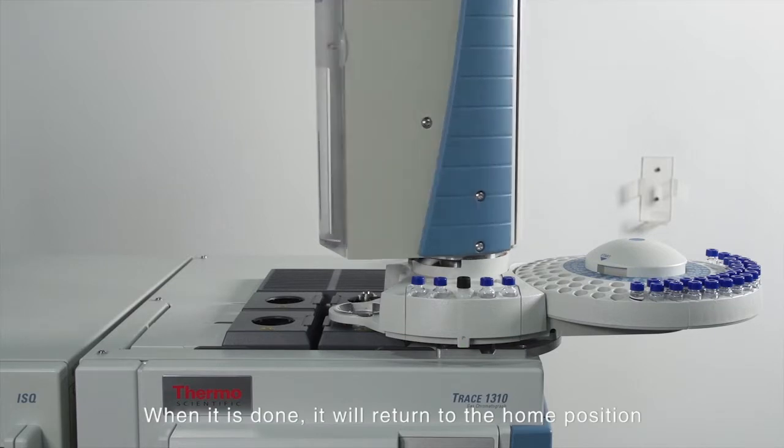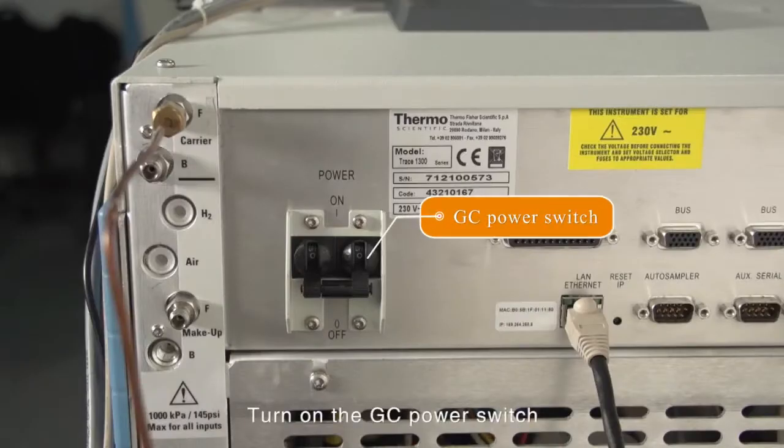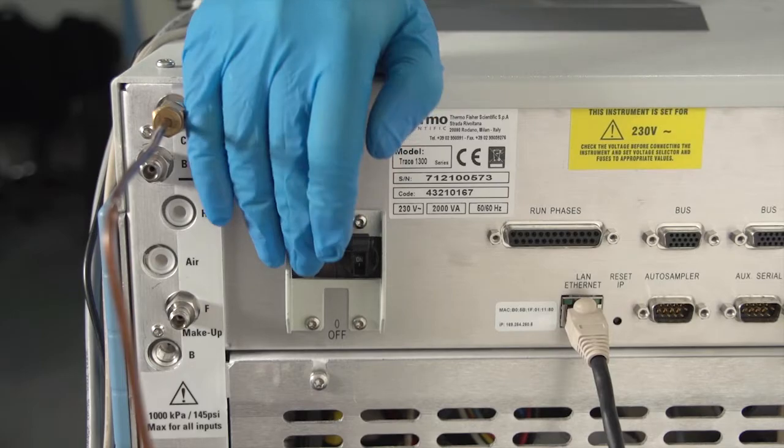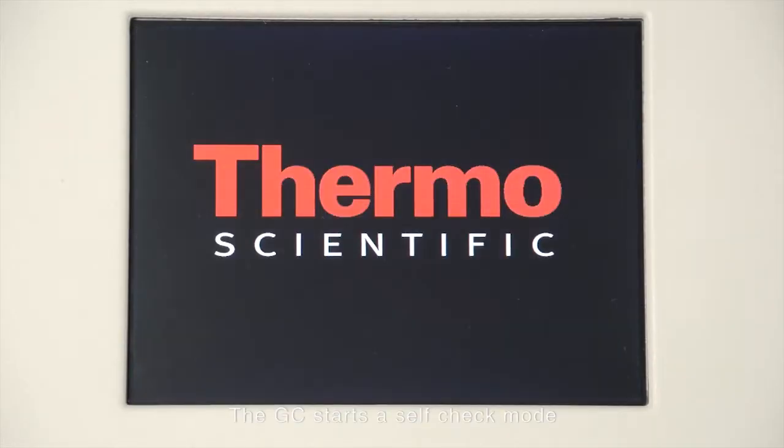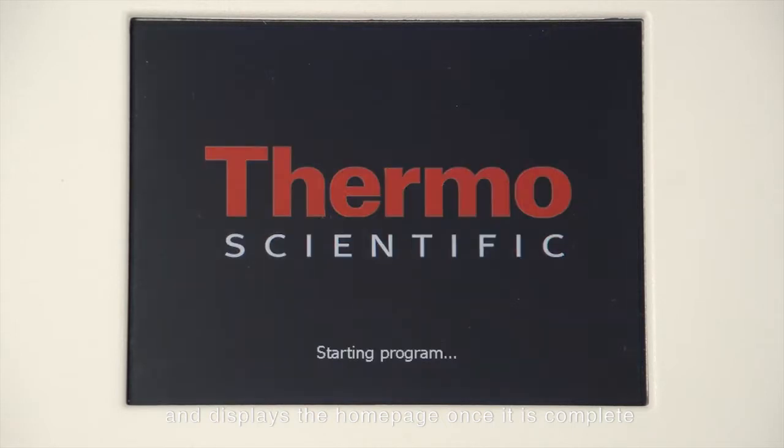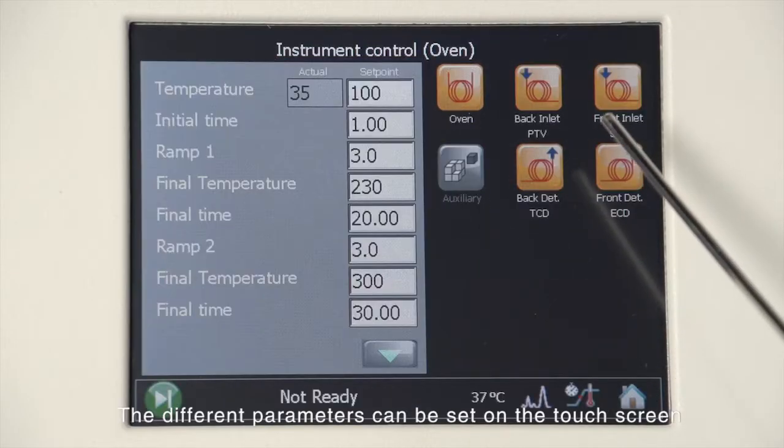Turn on the GC power switch. The GC starts a self-check mode and displays the home page. Once it is complete, different parameters can be set on the touchscreen.